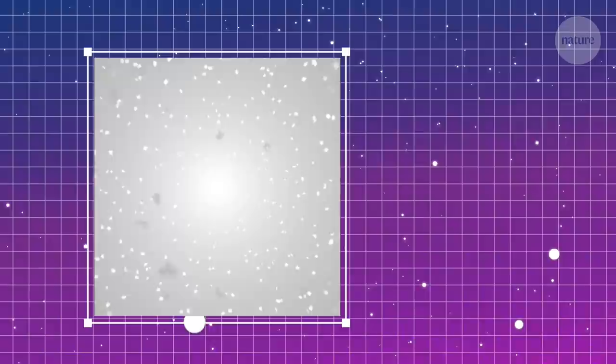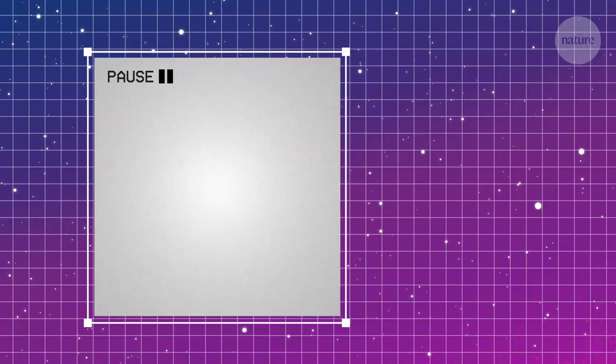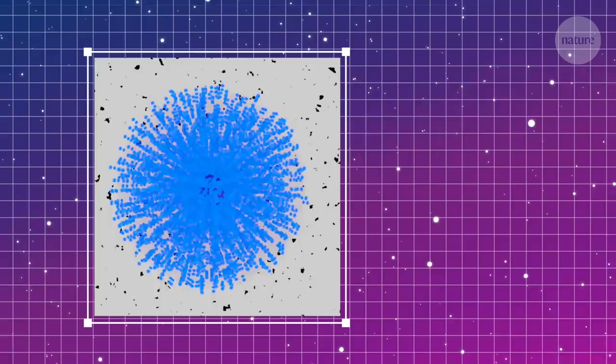The light from a single supernova can be as bright as entire galaxies, but this represents only a small fraction of the total energy emitted. The rest was carried away by the near massless, barely interacting neutrinos. And that provides scientists with an opportunity.